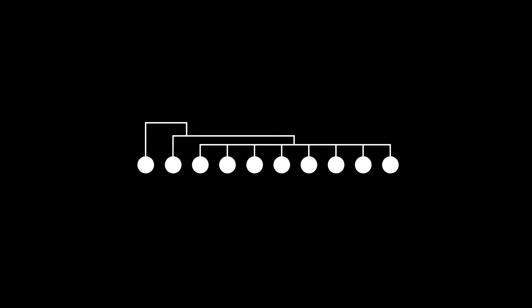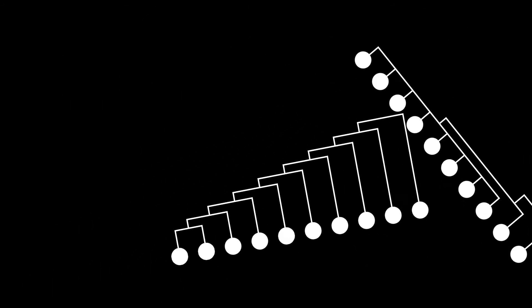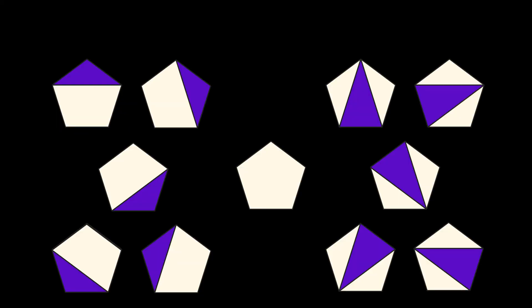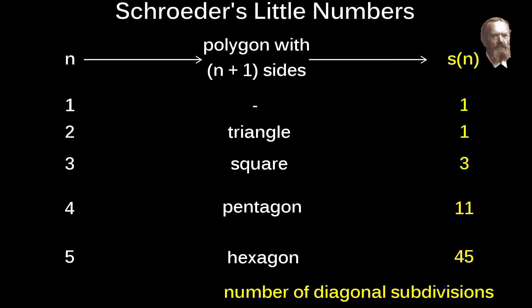We can't give a definite answer to the question of how Hipparchus calculated the numbers. He might, as a first step, have visualized the problem as one of branching trees. But it doesn't seem likely that he went as high as the tenth number by drawing 103,049 arrangements of a ten-branched tree. He might have considered arrangements of parenthesis around letters, which is another way of looking at the Schroeder Hipparchus numbers.